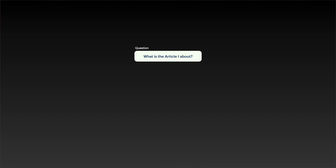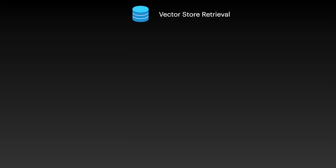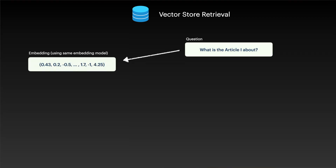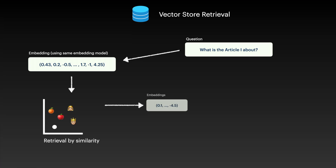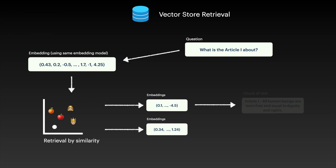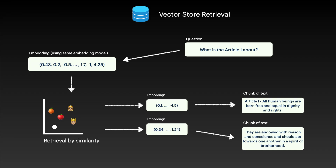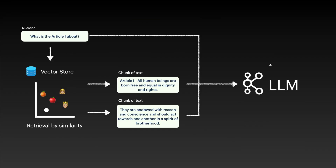Before jumping into how to query this vector store — if you like this type of content, please leave a thumbs up and subscribe to the channel. Now let's see how it works to query the vector store and get an answer back from any question about our documents. The user writes a question and we query the vector store with it. The user's question is also transformed into an embedding, and we can see which stored vectors are closest to that question. It returns the most relevant chunks of text, which are then given to an LLM along with the user's question to generate a proper, well-formatted response.